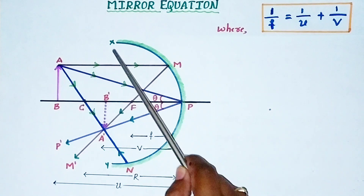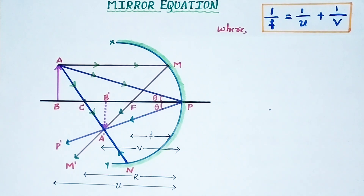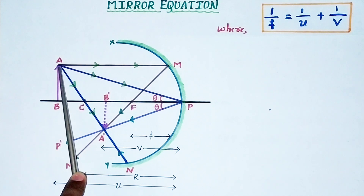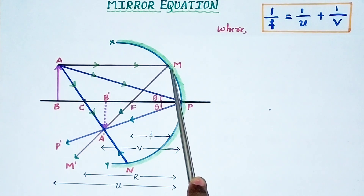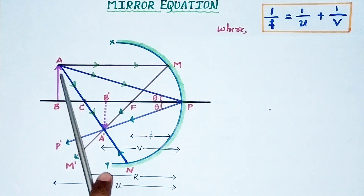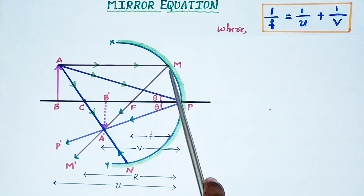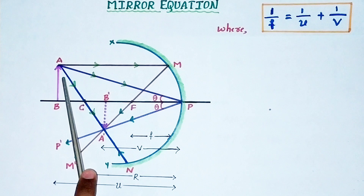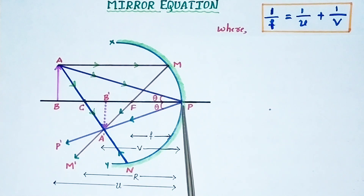Three rays are emitted from object AB. When these rays fall on the concave mirror, reflection of light takes place, and after reflection all the reflected rays converge at a point. The first incident ray AM is traveling parallel to the principal axis, so the reflected ray passes through the principal focus — this is the first rule. The second incident ray is AP, directed obliquely toward the pole — this is the fourth rule — so the reflected ray is also oblique, and the angles are theta.